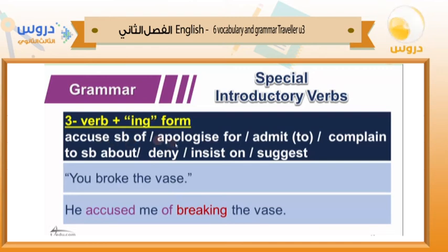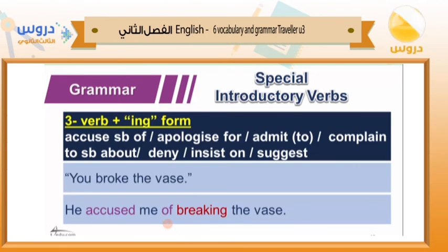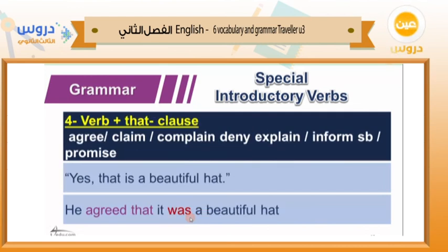Some introductory verbs are followed by the -ing form: accuse somebody of, apologize for, admit doing something, complain to somebody about, deny, insist on, suggest. Example: 'You broke the vase' — if someone is accusing you, we say 'He accused me of breaking the vase.' Not 'he accused me to break the vase' — it must be 'accused me of breaking'. So after accused, apologize, admit, complain, deny, insist, suggest — always use the -ing form.